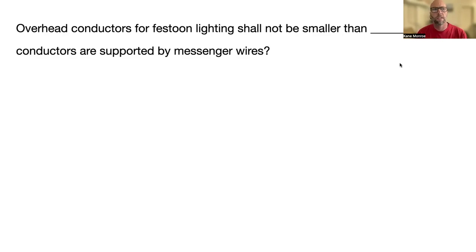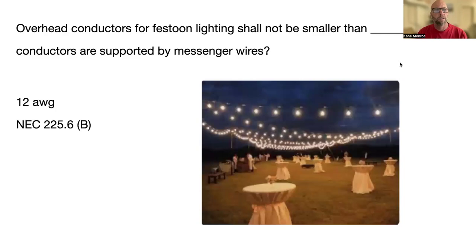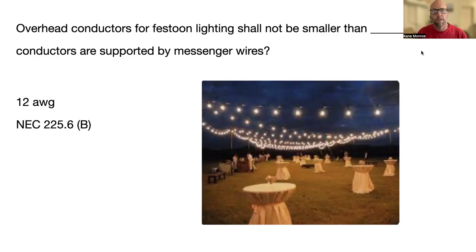Next one: overhead conductors for festoon lighting shall not be smaller than blank, unless the conductors are supported by a messenger wire. The answer is 12 AWG — that's NEC 225.6(B). You can look in the index under festoon lighting. I also give you a picture here of what festoon lighting looks like — those little party lights.